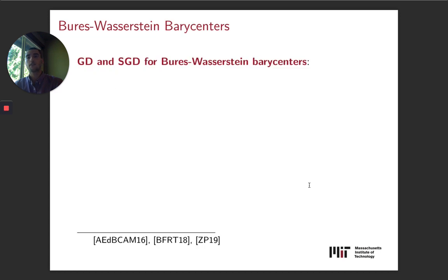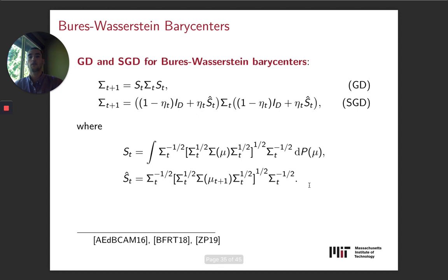One nice thing, especially in this case, is that we can write down really simple formulas for what the gradient descent and stochastic gradient descent updates look like for Bures-Wasserstein barycenters. Essentially what they are is just some simple matrix operations on your iterate and given samples from the distribution P.